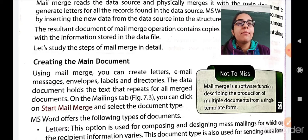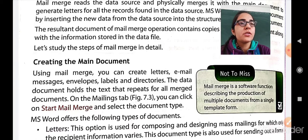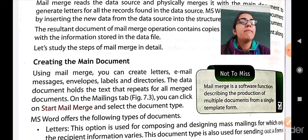Using mail merge, you can create letters, emails, messages, envelopes, labels, and directories. The data document holds the text that repeats for all the merge documents. On the Mailings tab, you click on Start Mail Merge and select the document type. First, you write a letter or message in Microsoft Word, then click on the Mailings tab available in the menu bar, click Start Mail Merge, and select the document type you want.